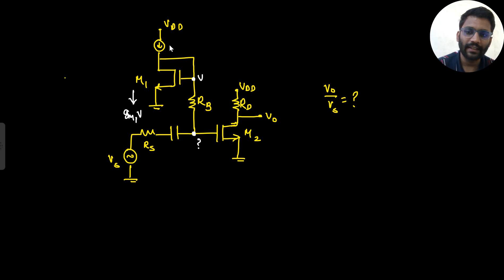Now for AC analysis this will be open circuited. So now this gmv current will flow from here and again from here as well because here there will be zero current. Since this is open circuited, this gmv current has to flow from this Rb resistance. So it will give a drop of gm1 Rb into V.